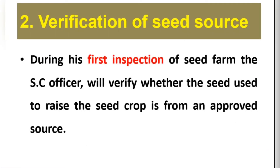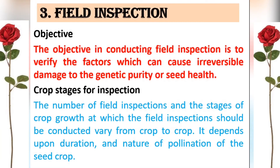Phase 2 is verification of seed source, which is actually carried out during Phase 3, because the seed certification officer (field inspector) verifies the seed source during the first field inspection. The main objective of Phase 3 — field inspection — is to verify factors that cause irreversible damage to genetic purity or seed health.